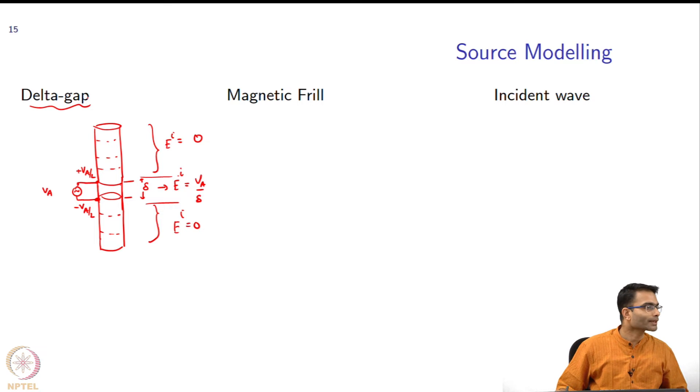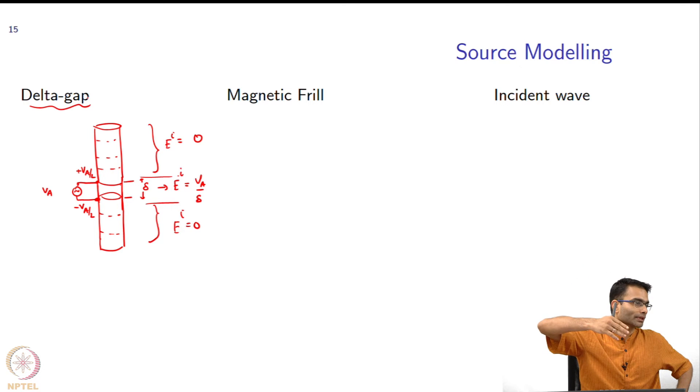Then you have to take recourse to your transmission line theory. But the point is that due to this applied voltage over here, there is now going to be a current that is going to flow in the wire, and that current induced in the wire is going to produce another scattered field which is what we have been calculating, and together they are zero in the conductor.